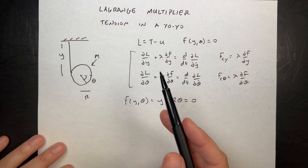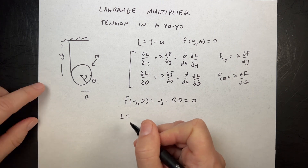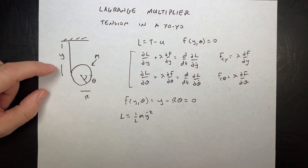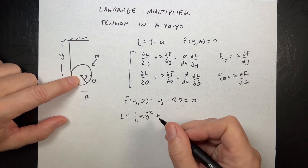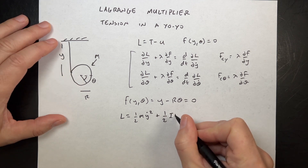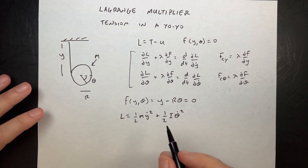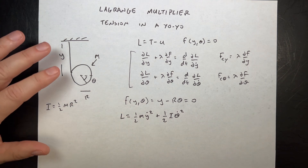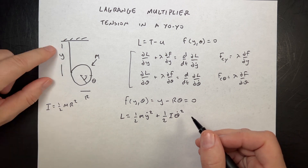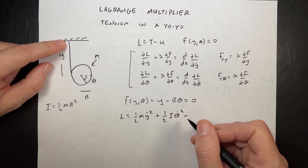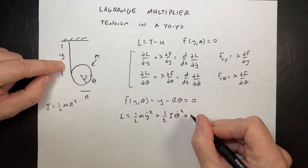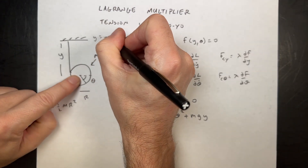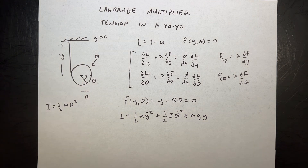Now we write down the kinetic energy and potential. The Lagrangian L is one-half M·Y-dot squared — that's the translational kinetic energy — plus one-half I·theta-dot squared for the rotational motion of the disk, where I for a solid disk is one-half M·R squared. The potential energy term contributes plus M·G·Y, because the Lagrangian is kinetic minus potential and I'm calling Y positive downward.